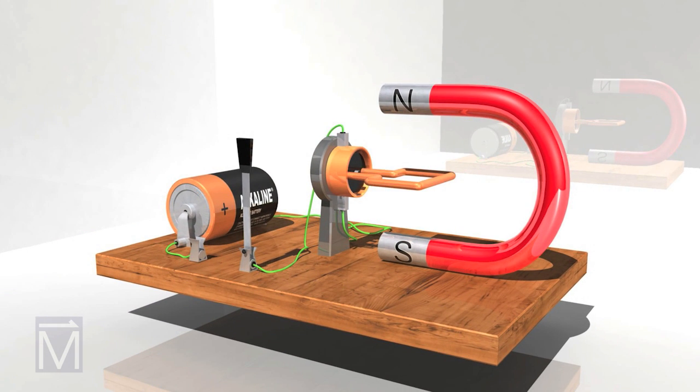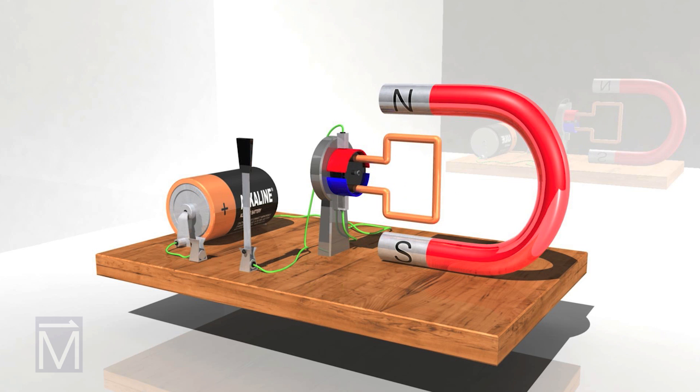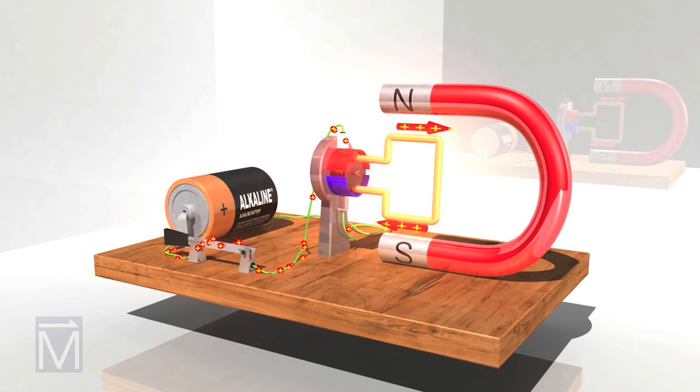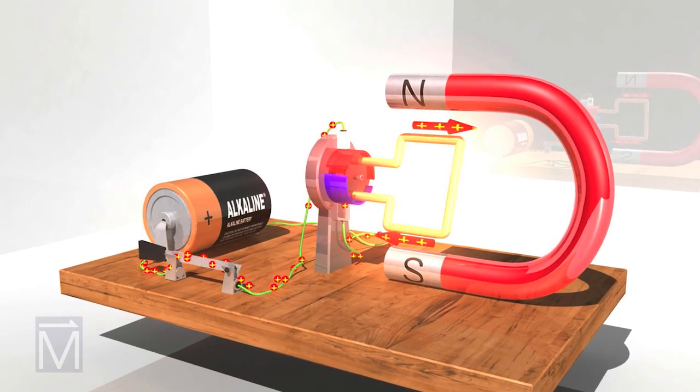Let's return the real commutator to its rightful place and see what happens now. Notice how one half of the commutator connects to one arm of the armature, while the other half connects to the other arm. The current enters the first arm, making the coil spin.